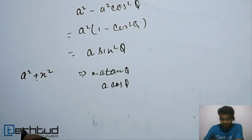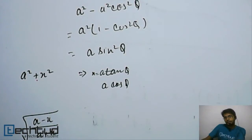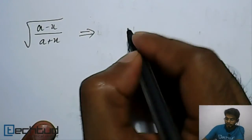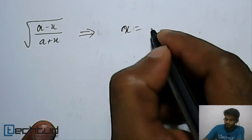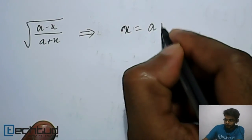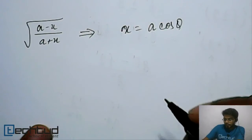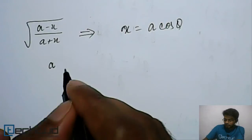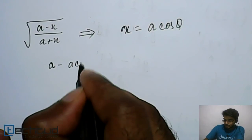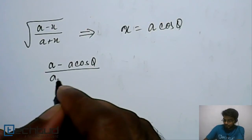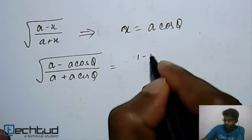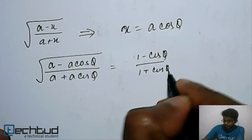Similarly, if you have an expression like √((a−x)/(a+x)), then you substitute x = a·cosθ. The expression will become √((a−a·cosθ)/(a+a·cosθ)), and 'a' cancels out, giving √((1−cosθ)/(1+cosθ)).